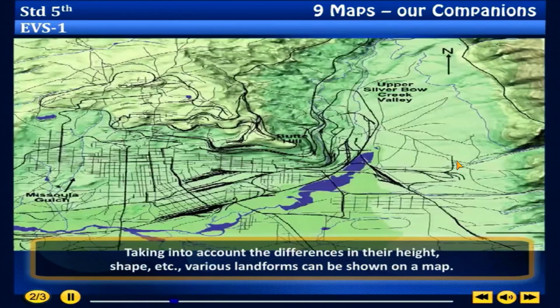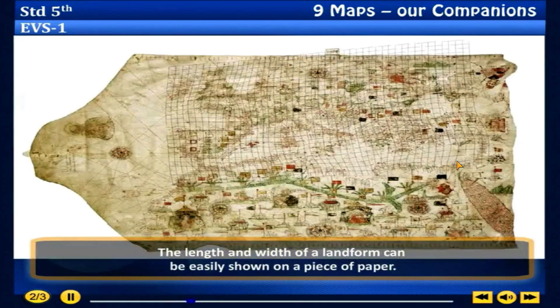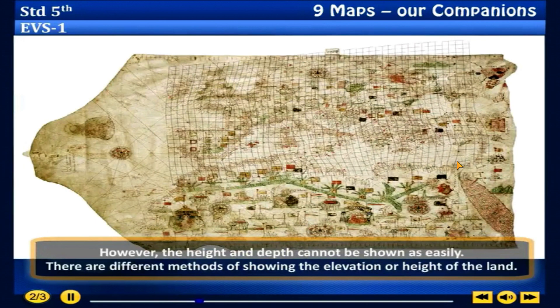Taking into account the differences in height, shape, etc., various landforms can be shown on a map. The length and width of a landform can be easily shown on a piece of paper. However, the height and depth cannot be shown as easily.